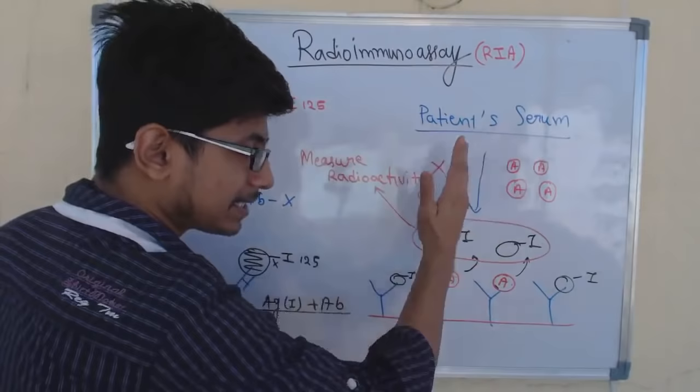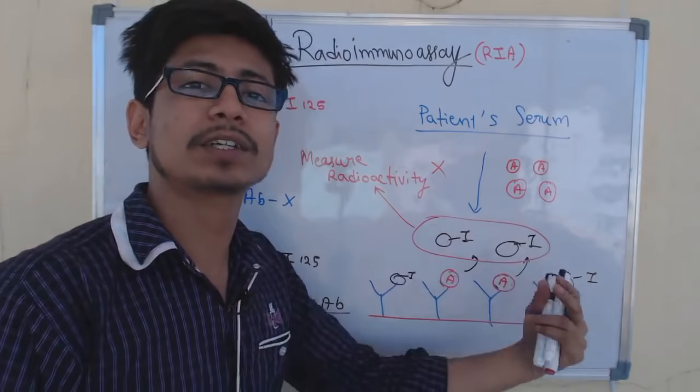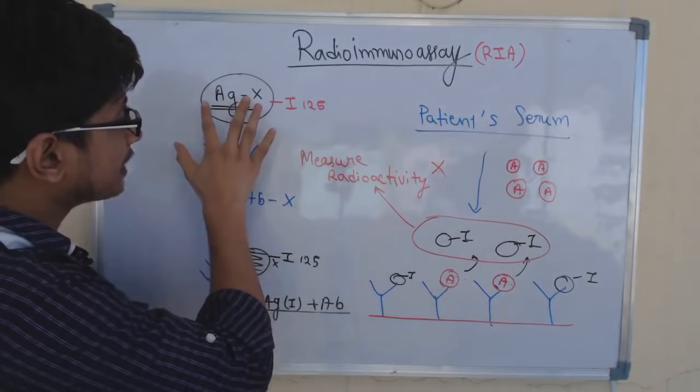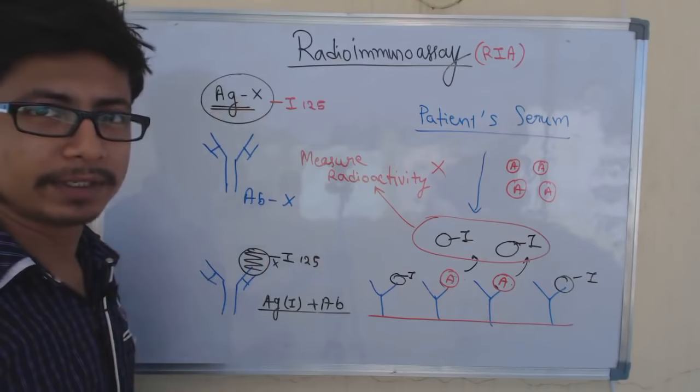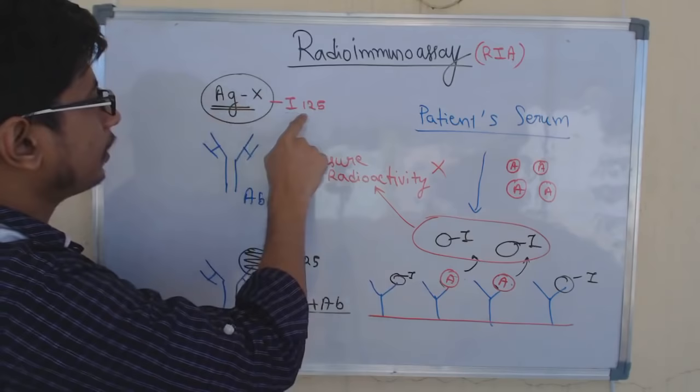In the first stage of creating the kit, let's say we want to find antigen X in the patient's serum. We take that specific antigen X and tag it with a radioactive dye — the radioactive isotope used here is iodine-125, a radiolabelled iodine. We attach this radiolabel to antigen X, so now our antigen X is radiolabelled.